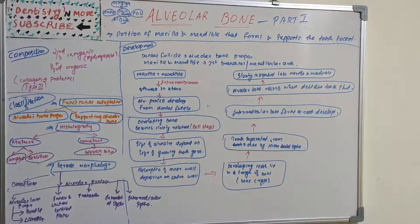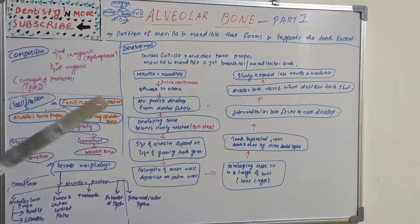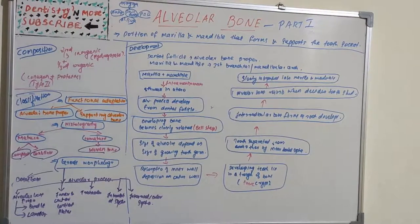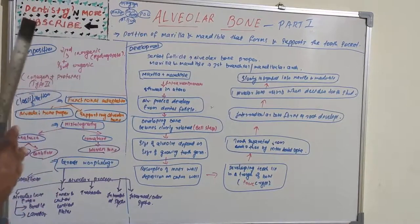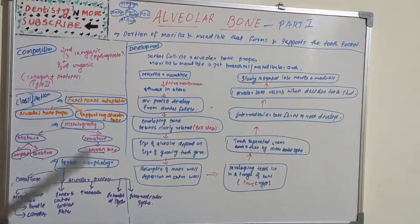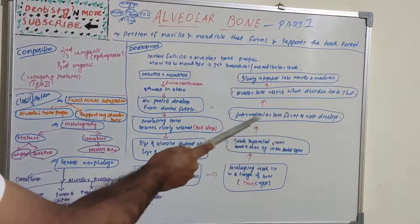In the bell stage, the developing bone becomes closely related to the tooth germ, and the size of the alveolar bone is dependent on the size of the growing tooth germ. The alveolar bone develops in a resorption-deposition fashion — it resorbs at the inner wall and gets deposited on the outer wall. Developing teeth lie in a trough of bone known as the tooth crypt, then are separated from each other by the development of interdental septa. With the onset of root formation, the interradicular bone develops in multi-rooted teeth.